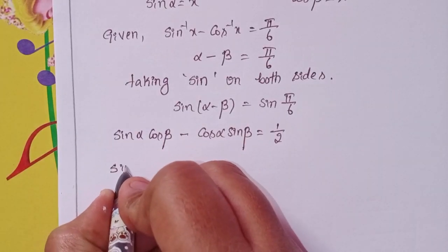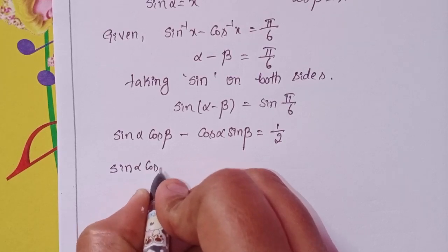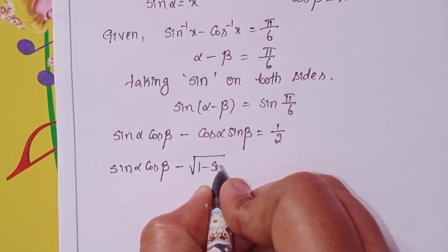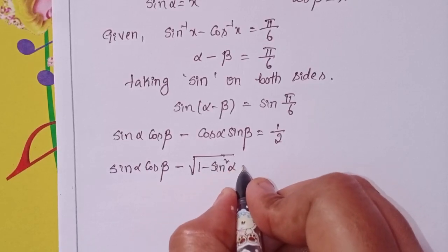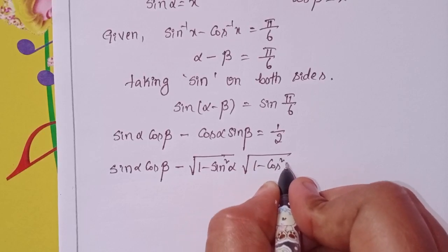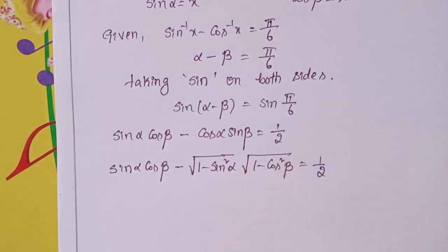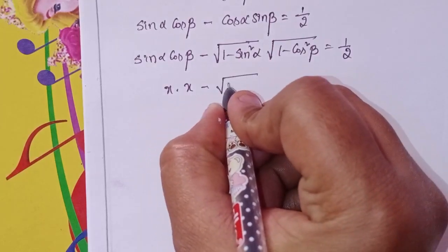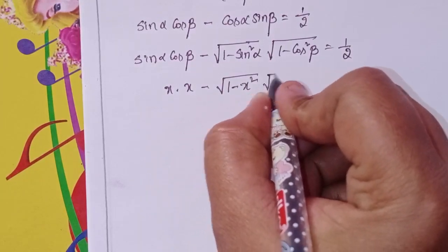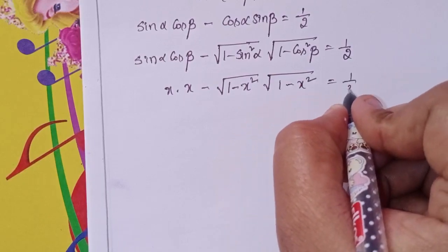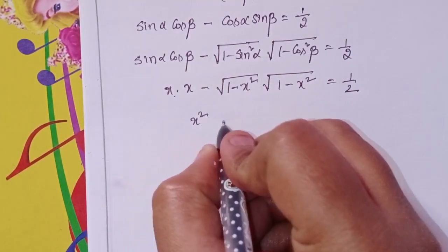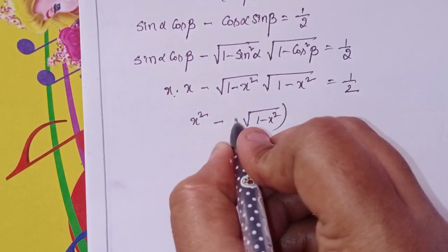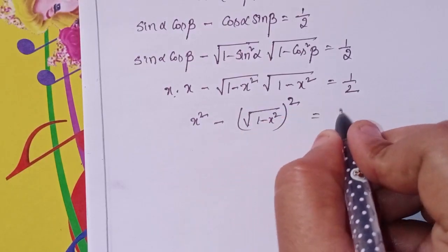Substituting: sin α · cos β = x · x = x². For cos α, write √(1 - sin²α) = √(1 - x²). For sin β, write √(1 - cos²β) = √(1 - x²). So: x² - √(1 - x²) · √(1 - x²) = 1/2.